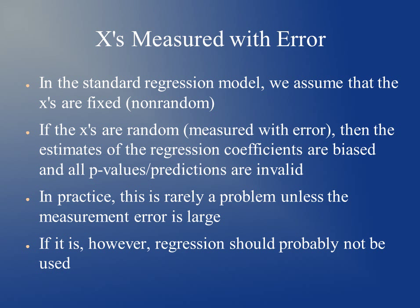Another violation of the assumptions is if the x's are measured with error. In the standard regression model we assume that the x's are fixed and non-random — the x's we input are the true data. If there is a lot of error when we collect the data, the estimates of the regression coefficients will be biased and all p-values and predictions will be invalid. In practice this is rarely a problem unless measurement error is large, so usually we can assume that the x's are fixed. If there is a problem with measuring with error, regression probably shouldn't be used.